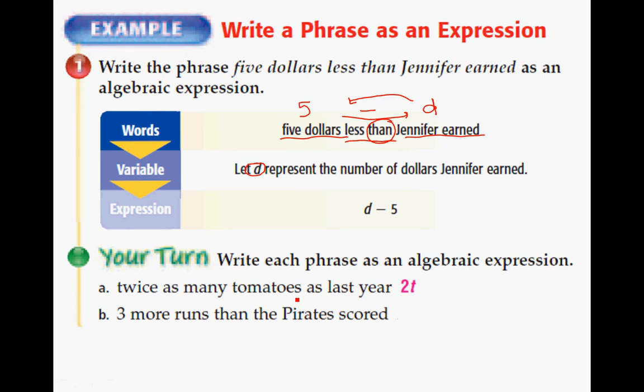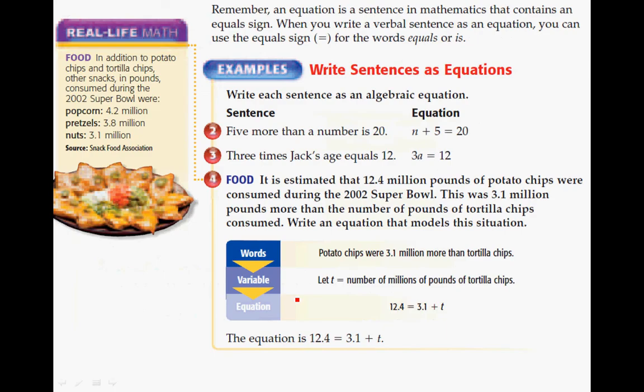So here are the answers. Twice as many tomatoes as last year is 2T. And three more runs than the Pirates scored is R plus 3.